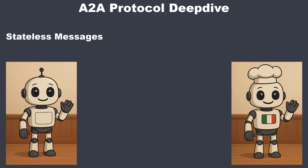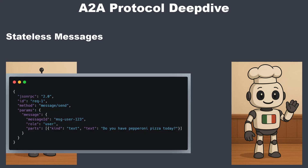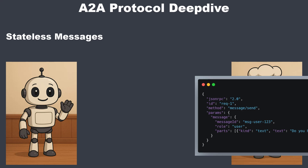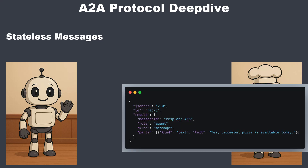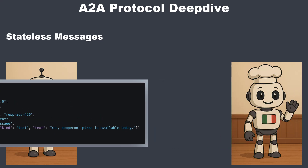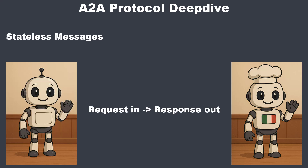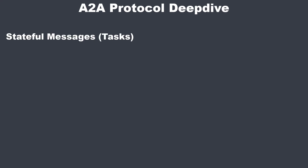Let's say our customer just wants to ask a quick question. They send a simple message using message send as the method name. This is how a simple message request looks with JSON RPC. The restaurant agent can answer this question immediately — it replies directly with a message object. Request in, response out. No state is saved, so this is perfect for quick queries.